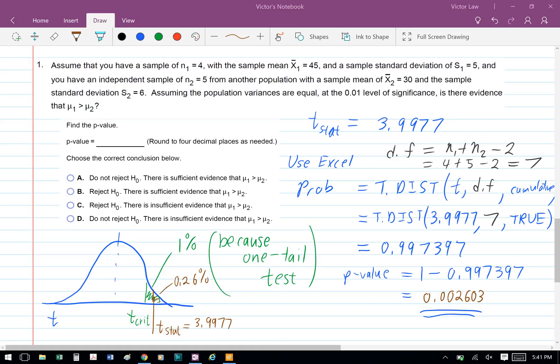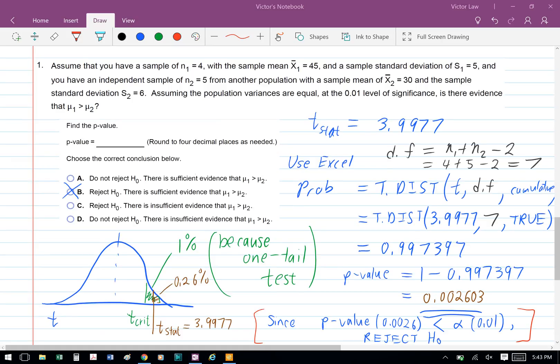This is not a two-tailed test. And since our p-value of 0.0026 is less than our alpha of 0.01, we can reject H₀ and accept H₁. So our answer is B.